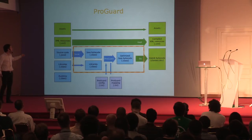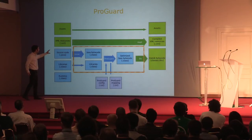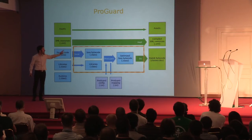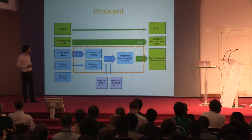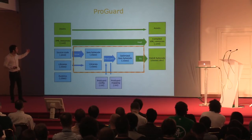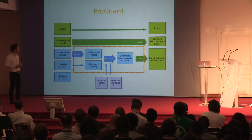Quickly reverting to the ProGuard diagram: if you look at this entire process, where your source code is compiled to Java bytecode, then optimized by ProGuard, then compiled again to Dalvik bytecode, that may seem like a little bit of a waste—a bit of an inefficient process. It would make sense to try to streamline that and take all of it together in a single process. And that's what Google has done, at least partially.